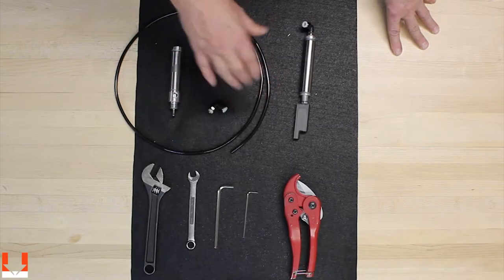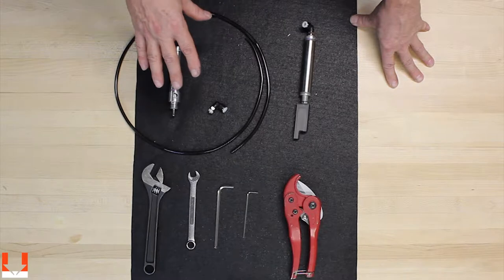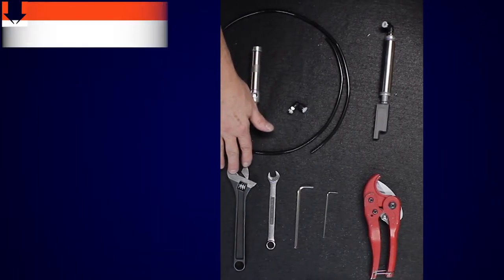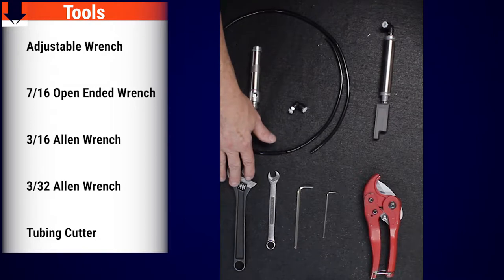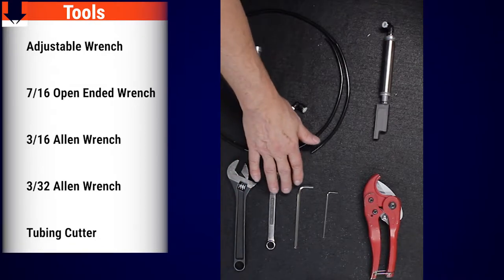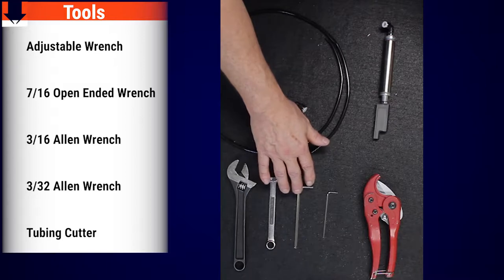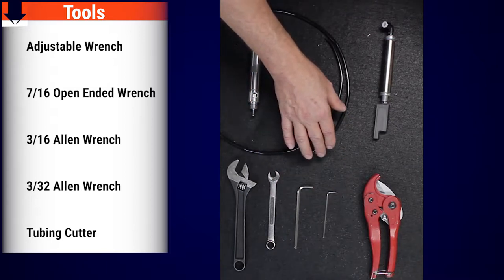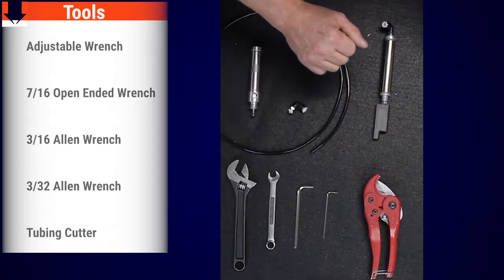The tools needed for the whole upgrade are these tools right here: an adjustable wrench, a 7/16th open end wrench, two allen wrenches, a 3/16 the larger one and the smaller one is a 3/32, and something to cut your tubing with.